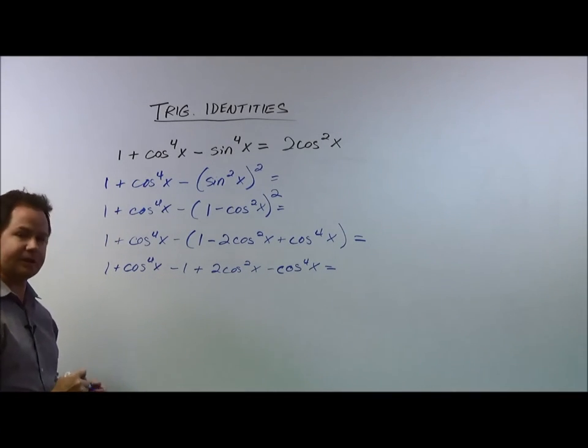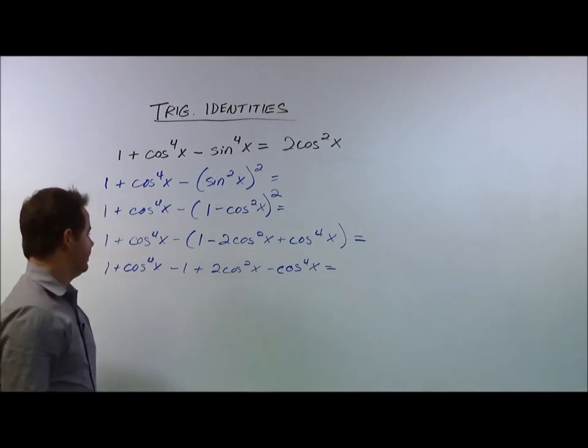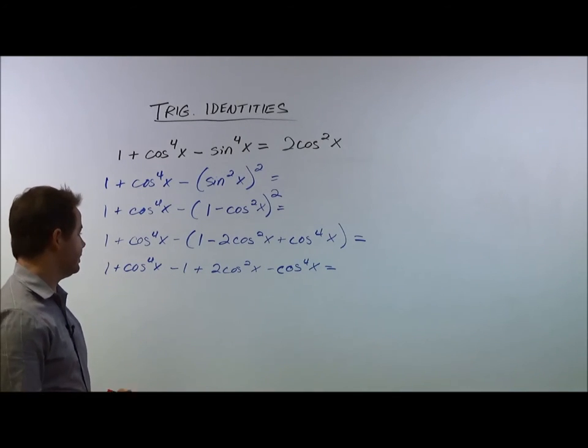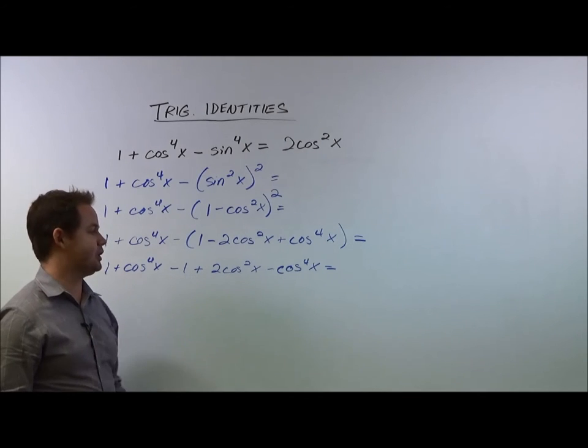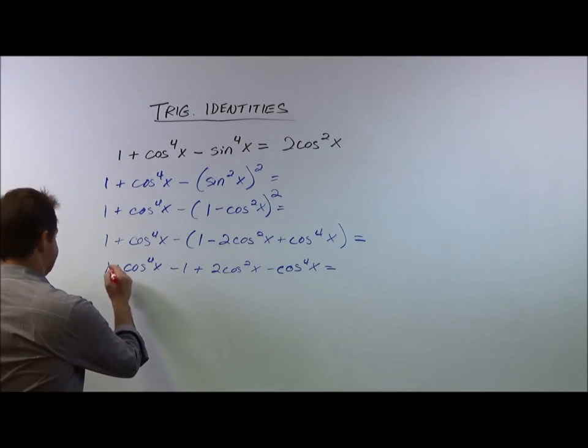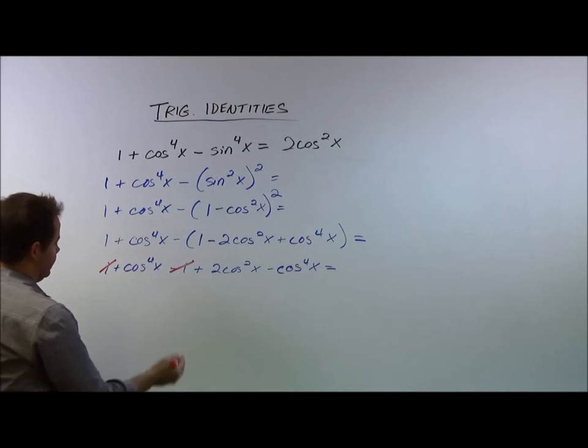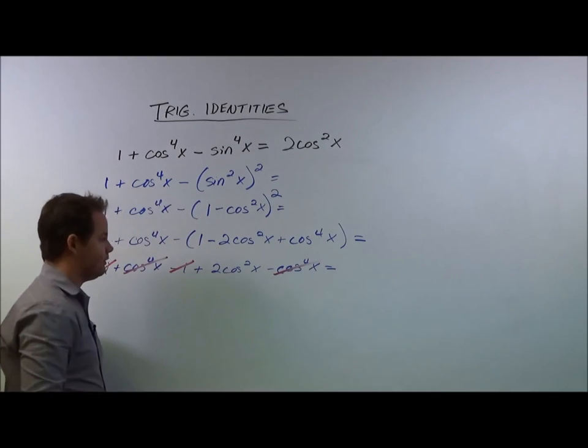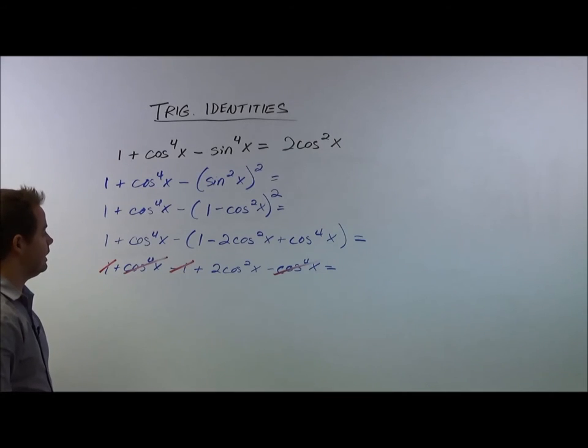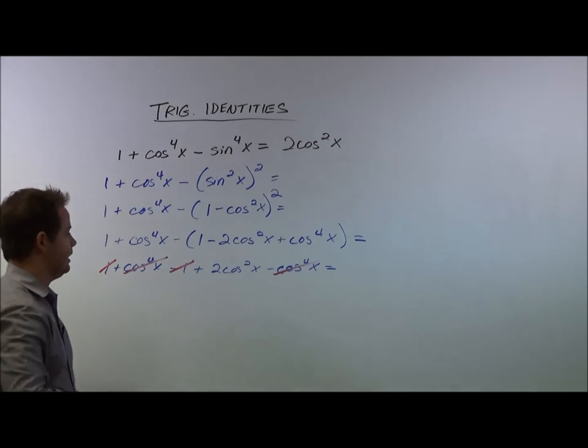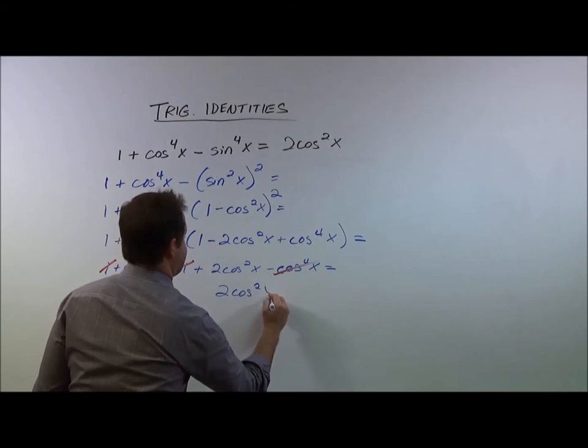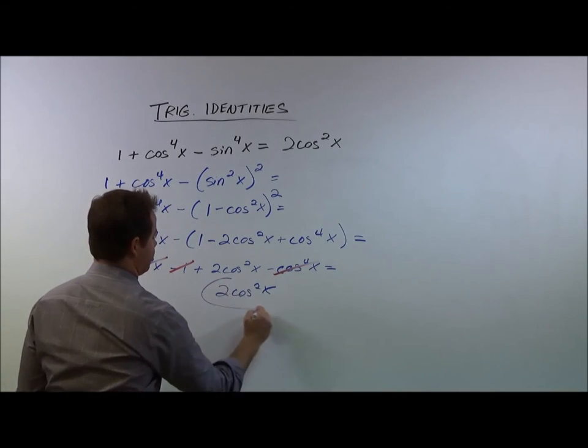And then here's the fun part. Let me color code this a little bit. We have some things that cancel out, and when we have things that cancel out, it's going to make our complicated looking expression much easier on the eyes. So here, a positive 1 and a negative 1 cancel out. A positive cosine to the fourth of x and a negative cosine to the fourth of x cancel out. And what we're left with here, after eliminating those terms, is 2 cosine squared of x.